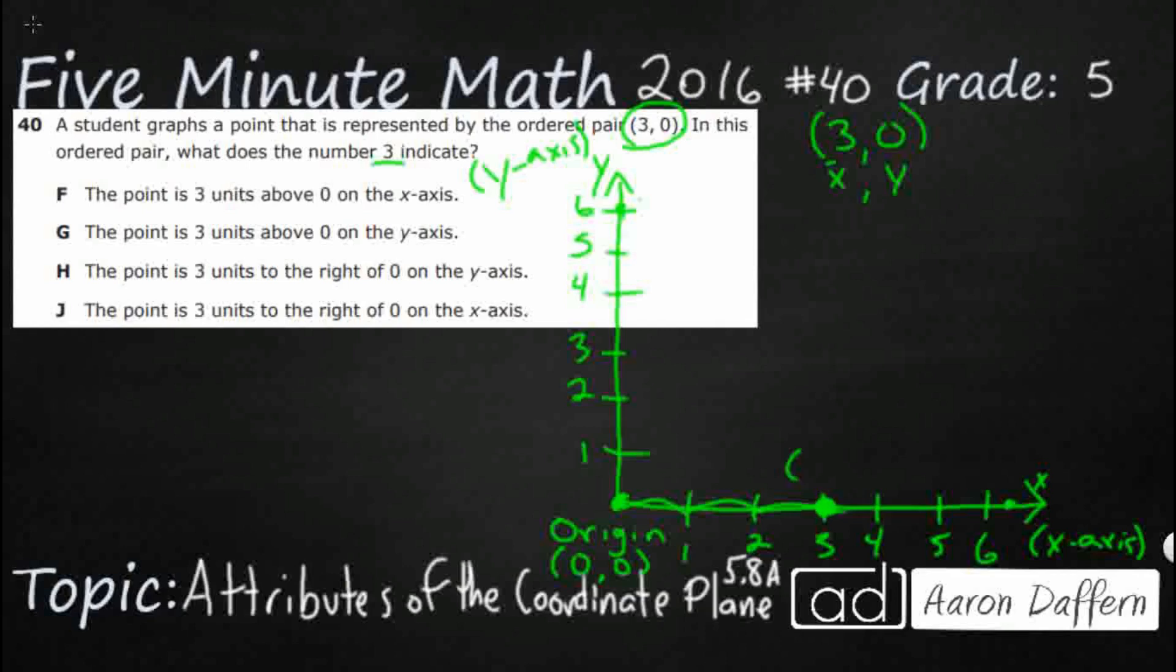So, this is 3, 0. And it's fine if it's sitting there on the x-axis because the y-coordinate is 0. That means it's not getting above the origin line at all. So, let's take a look at our answer selections.